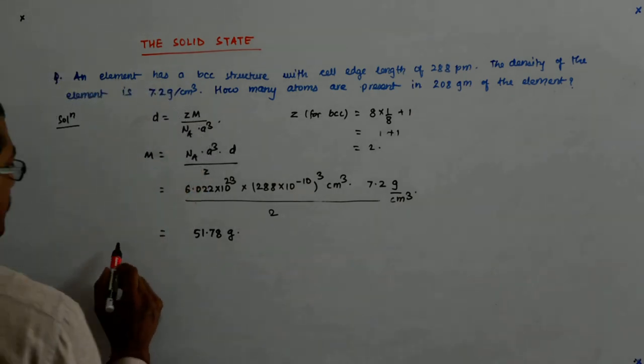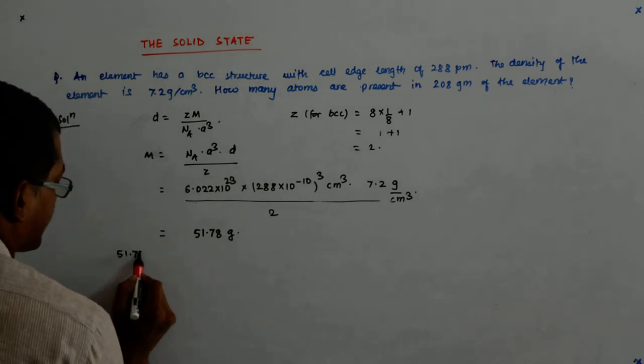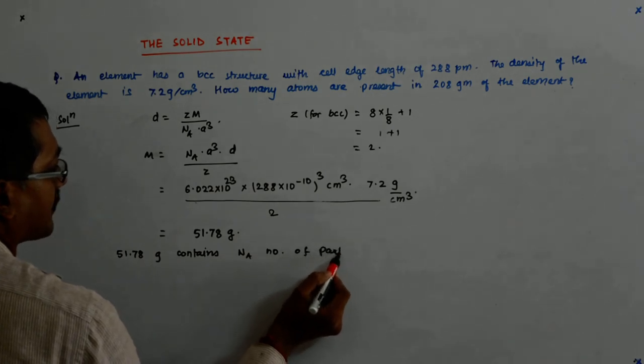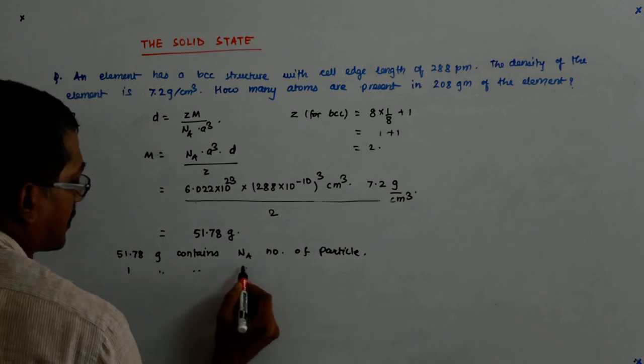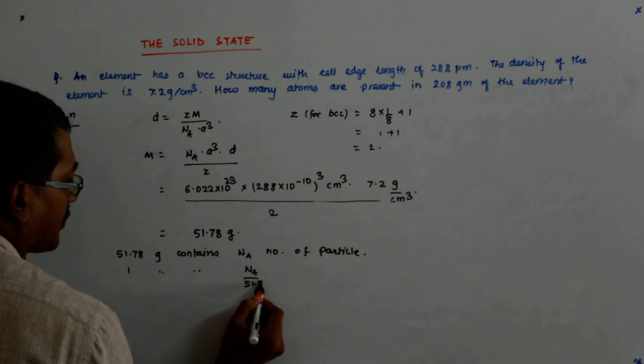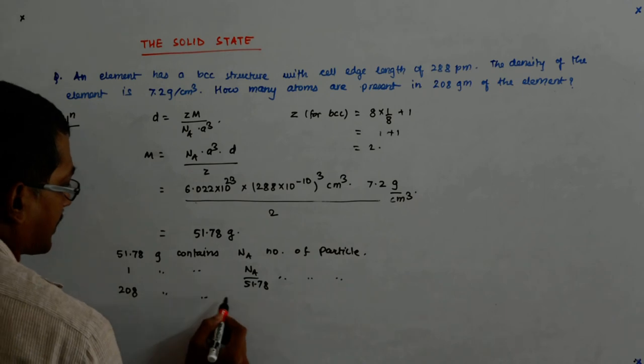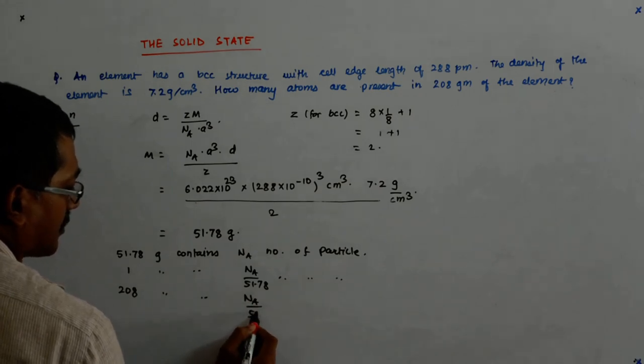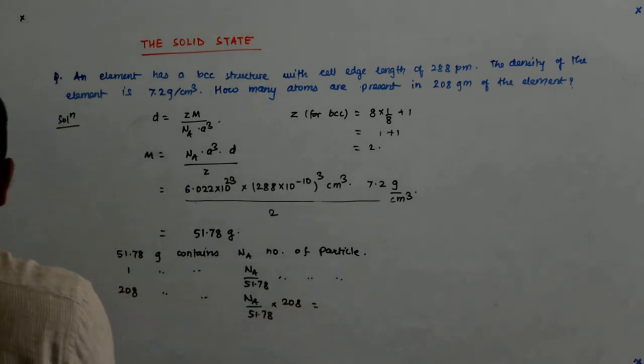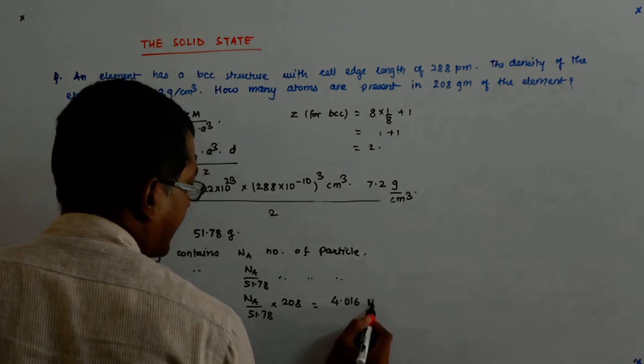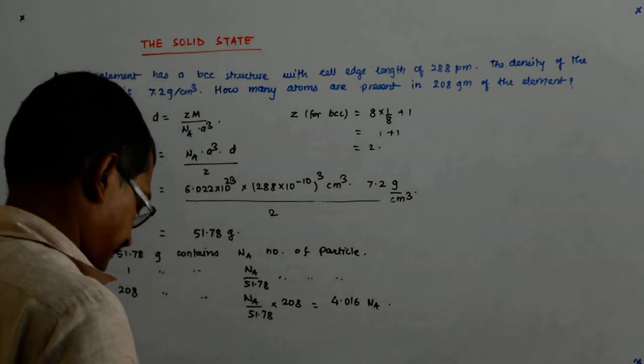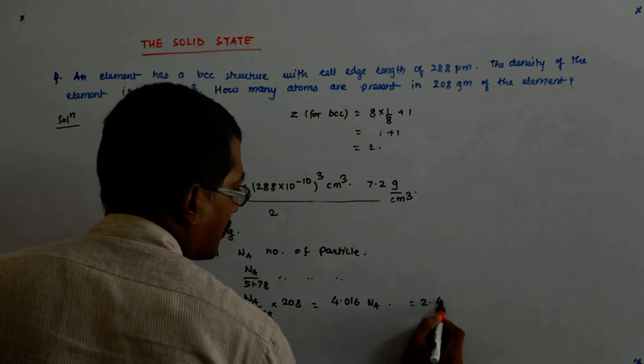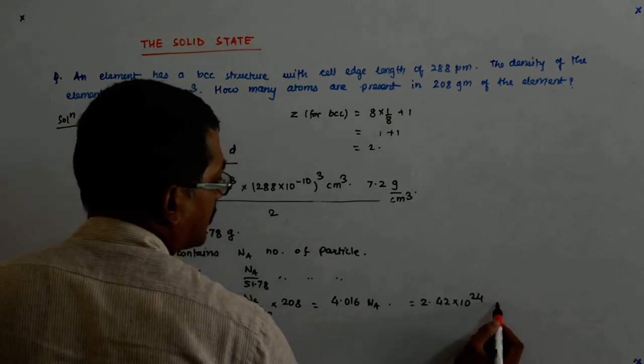We want that in 208 grams. So let us take the inverse of this into 208. So that gives me 4.016. So 51.78 grams contains NA number of particles. So 1 gram contains NA upon 51.78 number of particles. So 208, so that is somewhere around 4.016 NA number of particles. That is, so I multiply it by 6.022 into 10 to the power 23. So that gives me 2.42 into 10 to the power 24 particles or atoms.